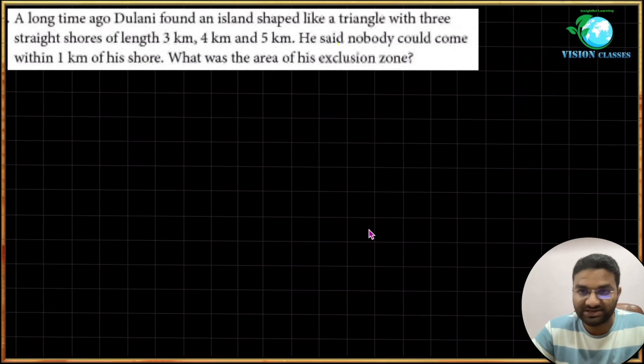Hi, hello everyone, welcome to Vision Classes. It's a class for IGCSE and GCSE students. So today we have to discuss one of the interesting questions from the IGCSE Maths. A long time ago, Dulani found an island shaped like a triangle.